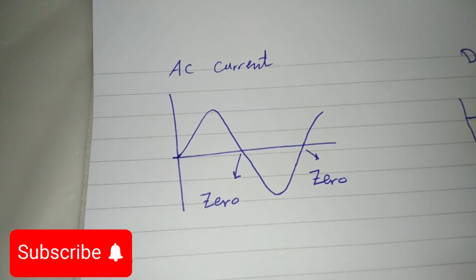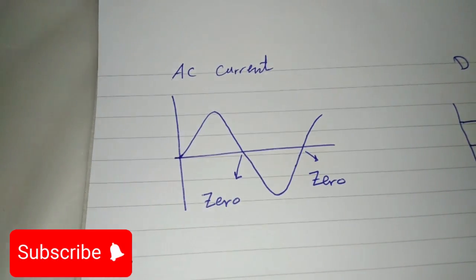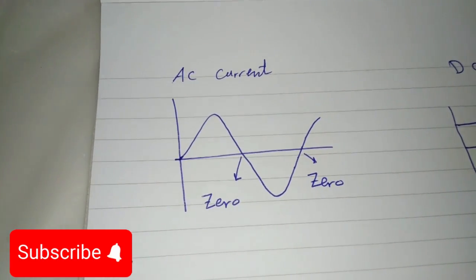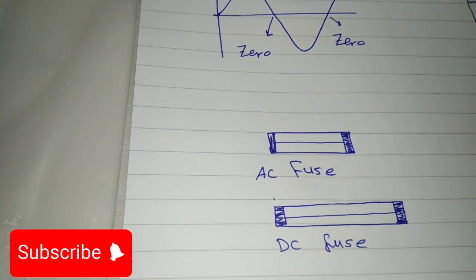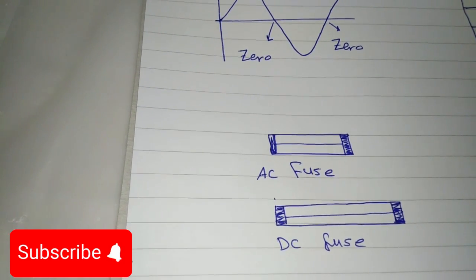In an AC circuit, when the fuse says goodbye, the current naturally drops to zero regularly, thanks to that dance I mentioned earlier. This makes it easier to say adios to any arcs that form without much drama.